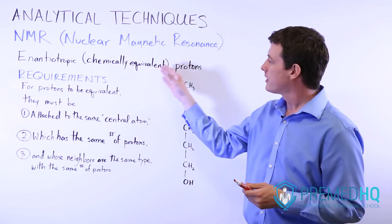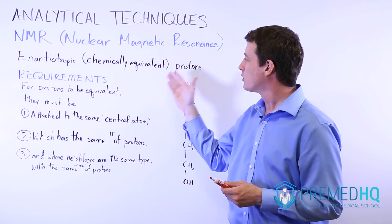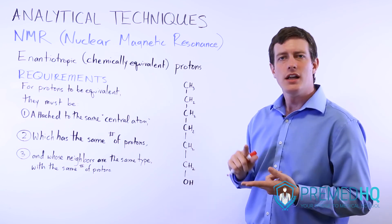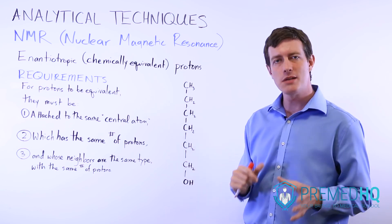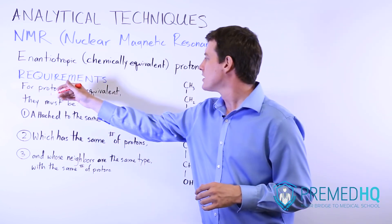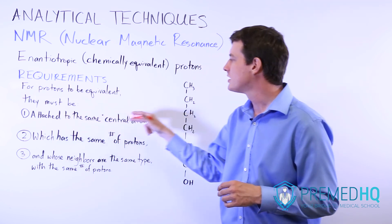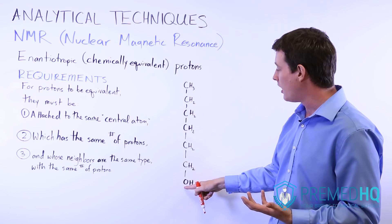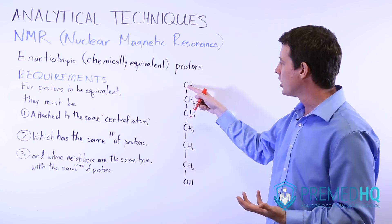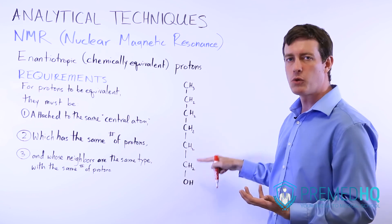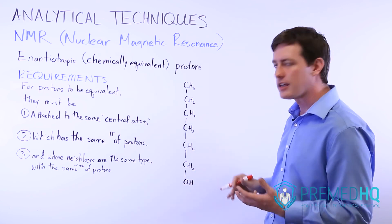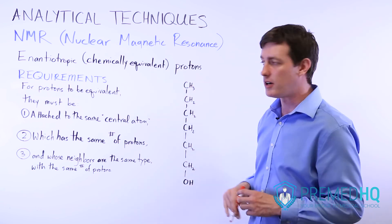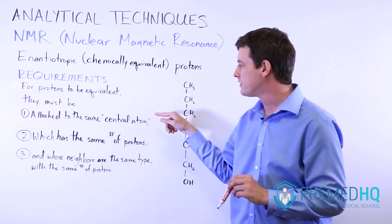In order for protons to be considered chemically equivalent, they need to meet certain requirements based on the type of atom they're bound to, the other protons in their environment, and what their neighbors look like. The first requirement is that protons must be attached to the same central atom. For example, if one proton is attached to oxygen and others are attached to carbon, these will not be chemically equivalent because there are significant electronegativity differences between an O-H bond and a C-H bond.